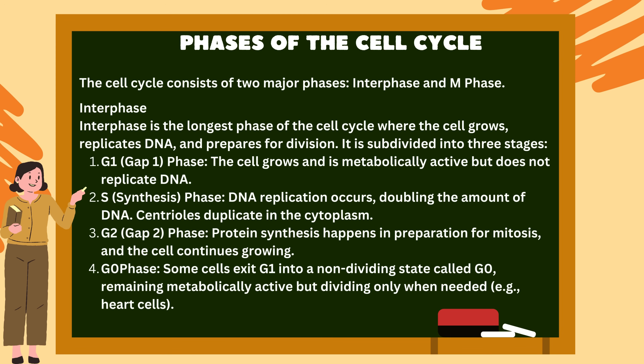G0 phase: Some cells exit G1 into a non-dividing state called G0, remaining metabolically active but dividing only when needed — for example, heart cells.